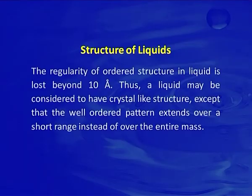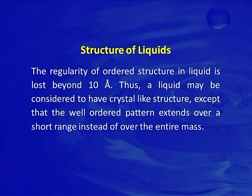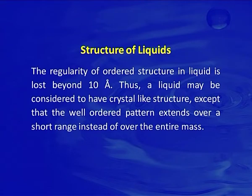In the case of solids, the range of order is very high, but in liquid this range is very short. The regularity of ordered structure in liquid is lost beyond 10 angstroms. Thus, a liquid may be considered to have a crystal-like structure except that the well-ordered pattern extends over a short range instead of over the entire mass.